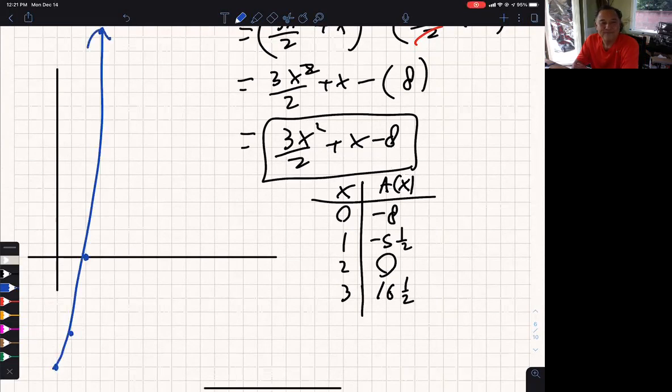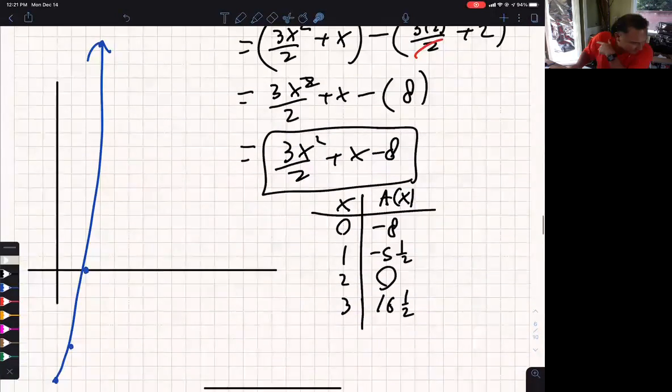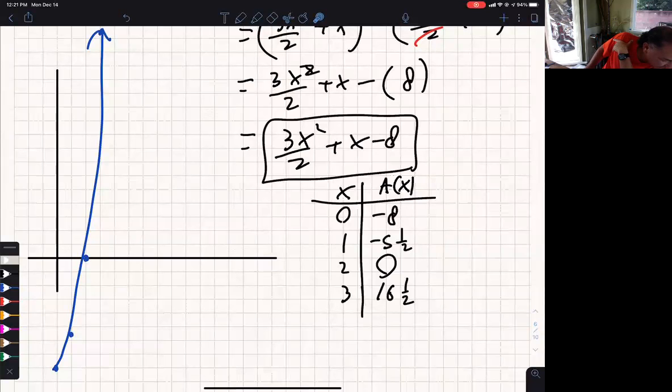It's a parabola. I just know it's a parabola because x squared. So I kind of draw a parabola. That would be the graph.